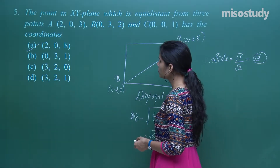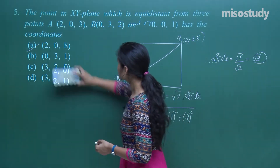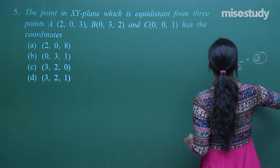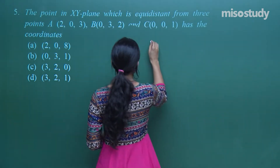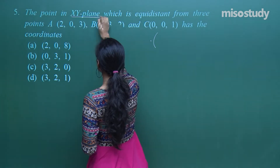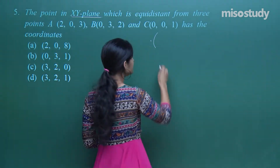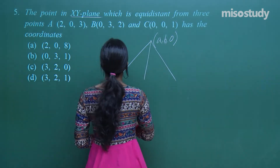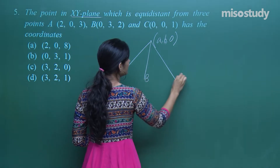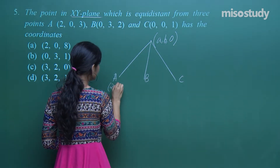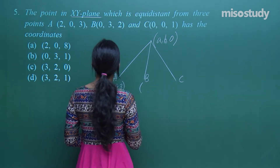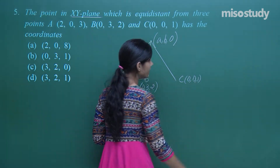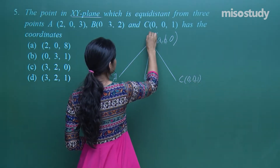The next question: find the point in the xy-plane equidistant from three points A(2,0,3), B(0,3,2), and C(0,0,1). Since the point is in the xy-plane, its z-coordinate is 0. Let this point be P(a, b, 0). We need AP = BP = CP.